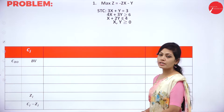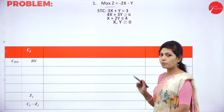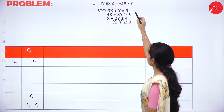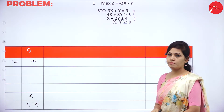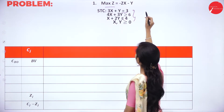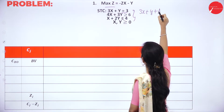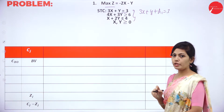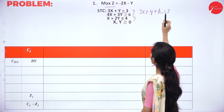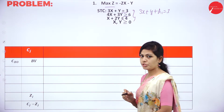So we have an objective function and constraints. All objective functions should be maximization — this problem is of maximization type. Next, I will look at the constraints. We have three constraints. The first constraint is of equal type. If it is equal type, we have to add only the artificial variable.